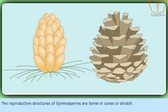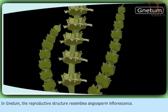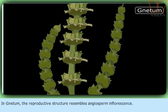The reproductive structures of gymnosperms are borne in cones or strobili. In Gnetum, the reproductive structure resembles angiosperm inflorescence.